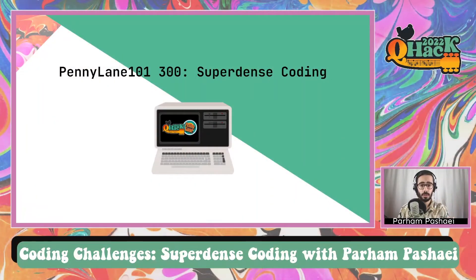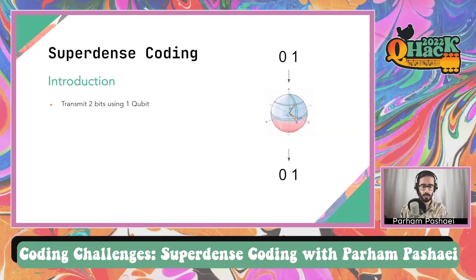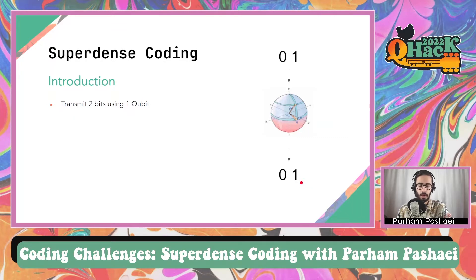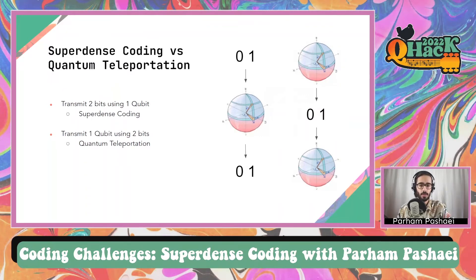Today we are going to go through super dense coding. At the beginning we start with a review of the fundamentals of super dense coding, and then we jump into the code. So before we go to the code, let's review the problem. Super dense coding allows us to transmit two classical bits using one qubit. The input is two classical bits, and the output after measurement is again two classical bits transmitted using one qubit. To some of you this might sound familiar because there are some similarities to quantum teleportation.